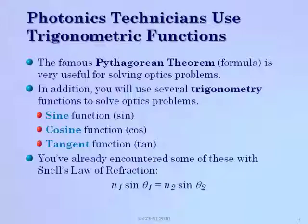You've already encountered some of these functions in previous modules. For example, Snell's Law of Refraction, which says index of refraction 1 times the sine of theta 1 is equal to N2 times the sine of theta 2. So you may have already used that function. Now you'll learn how to relate it to right triangle geometry.